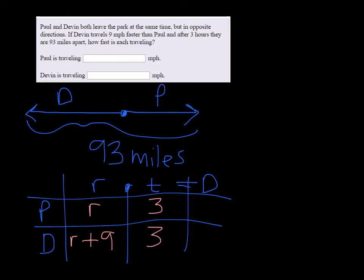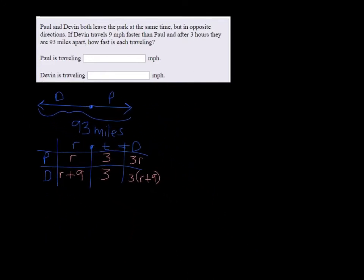We multiply and we get 3R for the distance of Paul and 3 times R plus 9 for the distance of Devin. At this point, we're ready to make our equation and solve.